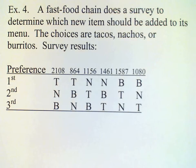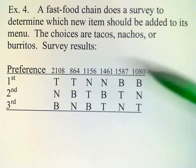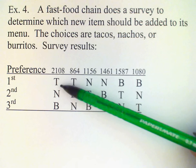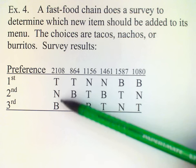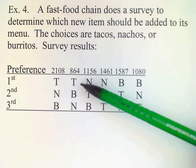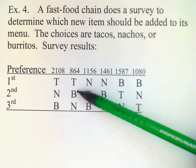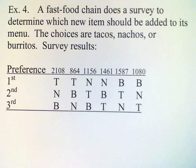We have this preference table: 2,108 voters prefer tacos first, then nachos, then burritos. 864 prefer tacos, then burritos, then nachos, and so on. All six possibilities are given in this table.